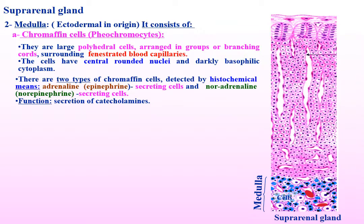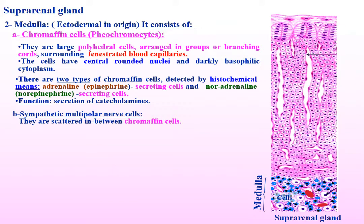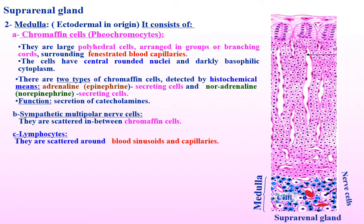There are two types of chromaffin cells detected by histochemical means: adrenaline (epinephrine) secreting cells and noradrenaline (norepinephrine) secreting cells. Function: secretion of catecholamines. Sympathetic multipolar nerve cells are scattered in between the chromaffin cells. Lymphocytes are scattered around blood sinusoids and capillaries.